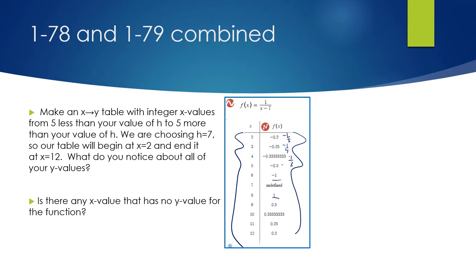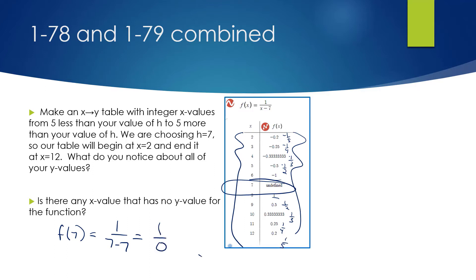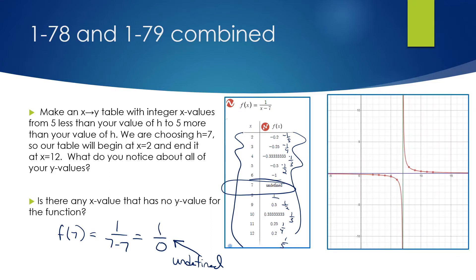Notice that the values kind of mirror each other — one side is negative and one side is positive. Are there any x-values with no y-value? Yes — at x = 7. If we compute f(7) = 1 / (7 − 7) = 1/0, that is undefined. We cannot divide by zero. On a Texas Instruments calculator you would see an error message for that value.